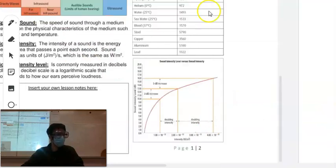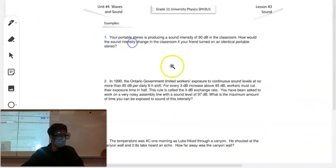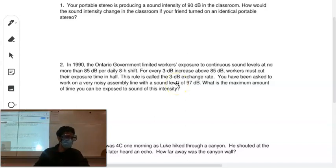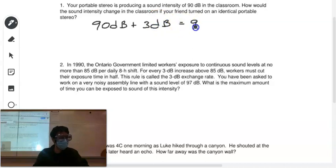All right. Let's go over some questions then. So on the back, kind of already talked about this, but let's say your portable stereo producing a sound intensity of 90 decibels. That's a little loud for one. How would the sound intensity change in the classroom if your friend turned on an identical portable stereo? So remember I talked about this. If you double the intensity, you increase your decibels by three. So your answer would be 90 decibels plus an additional three decibels since you doubled the intensity. So it's just 93 decibels.